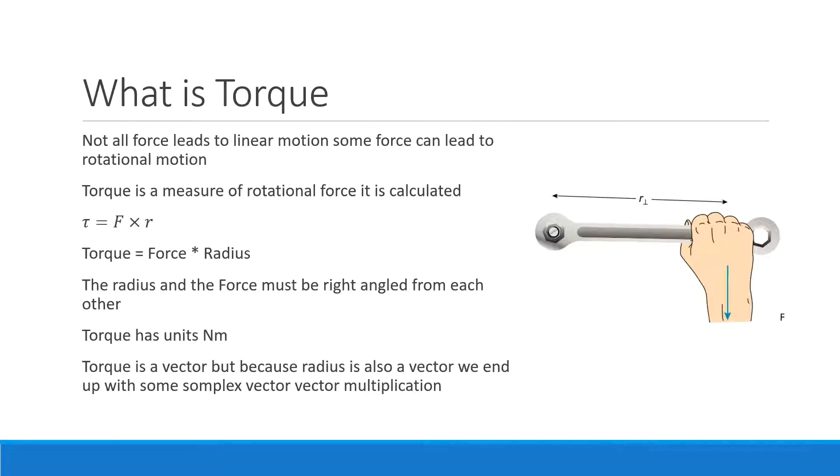Torque is calculated as τ = F × r. Torque equals force times radius. The radius and force must be right angled from each other. You can see here I've got a radius of this metal bar and a force being pushed or pulled downwards by the person, and these are right angles. It's really important that those are right angles because it's not torque if they're at another angle.